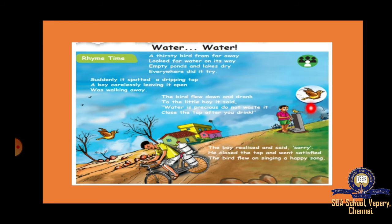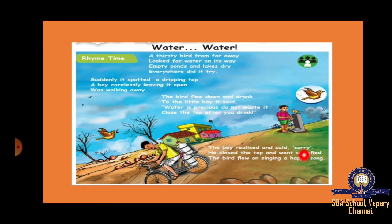In this poem, a bird is very thirsty and searching for water. All the ponds and lakes were dry everywhere. But it found a dripping tap. One boy had carelessly left the tap open and was walking away. The bird drank the water and said to the little boy, 'Do not waste water because water is very precious. Close the tap after you drink.' The boy realized and said sorry. The bird flew on singing a happy song. We should not waste water — that is the moral of this poem.